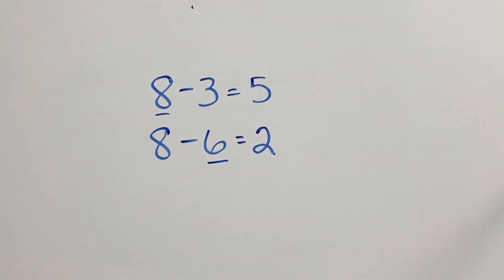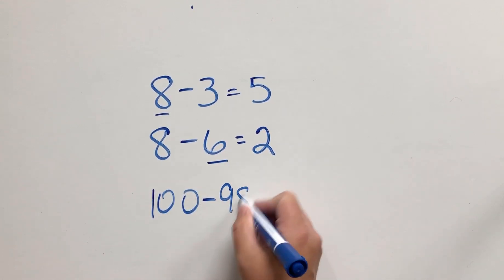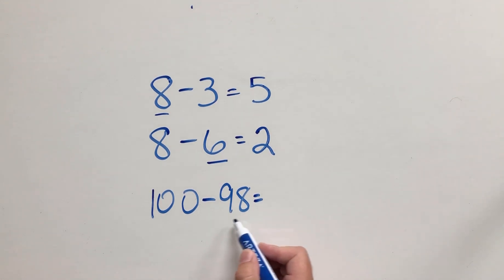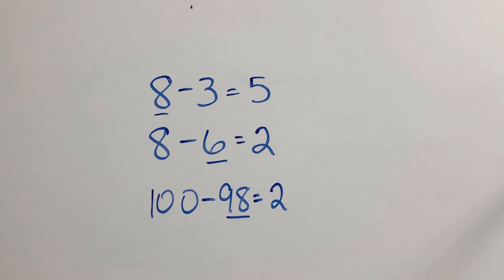Now, if we were going to use that with bigger numbers, for example, if we have 100 subtract 98, would it be effective to count back? Not really, right? Because we're not going to start with 100 and then count back all the way to two. It would be more effective to start with the smaller number 98 and then count up 99, 100 to find the difference.